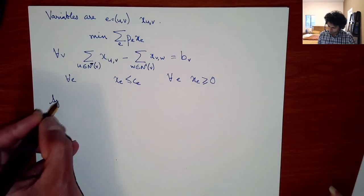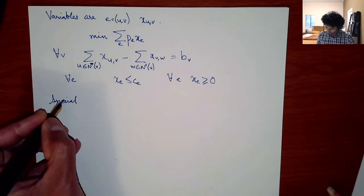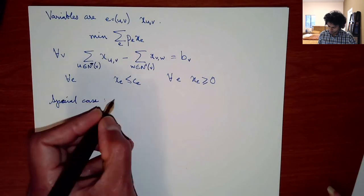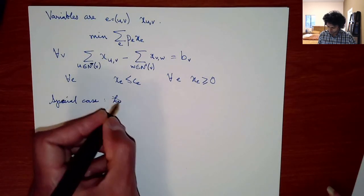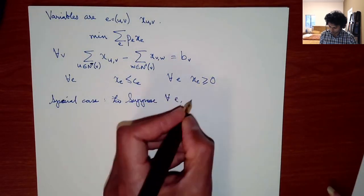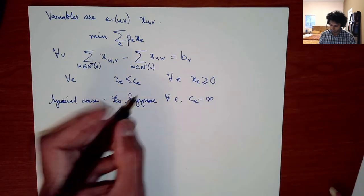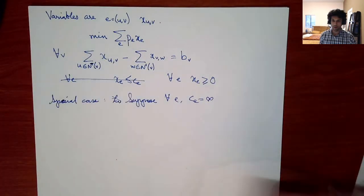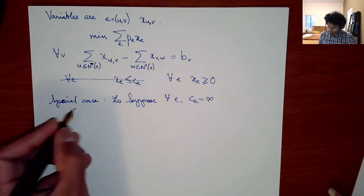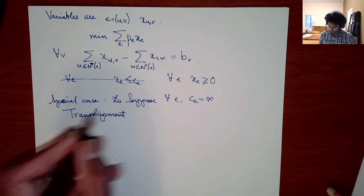A special case: if all capacities are infinite — so you can send as much flow as you want but still want to minimize price — this is called the transshipment problem.